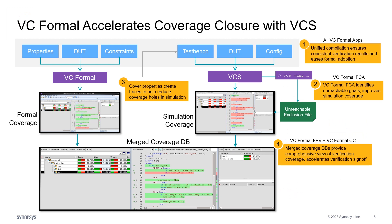Any VCIS-based verification flows should leverage VC Formal FCA to reduce the manual coverage closure effort. There are other benefits to using VCIS and VC Formal in the same flow. First of all, they share the same compilation front end, ensuring smooth compilation and design interpretation. For reachable but hard-to-hit coverage goals, users can add cover properties and use VC Formal FPV to generate traces, which will assist users in creating additional test cases needed for simulation.